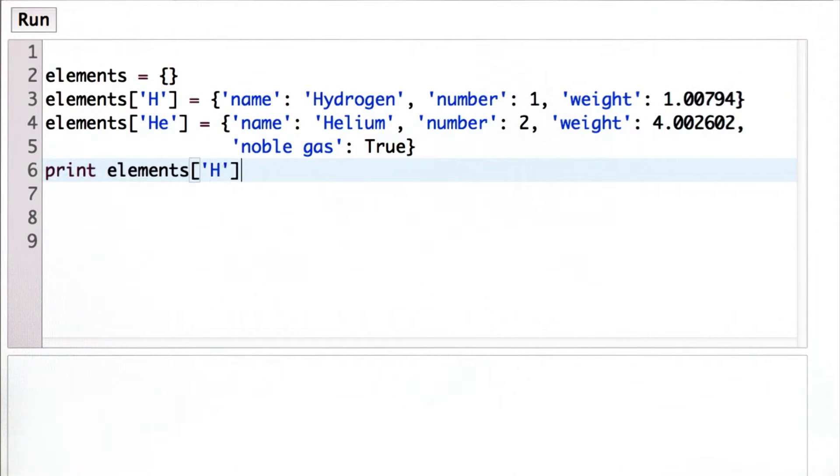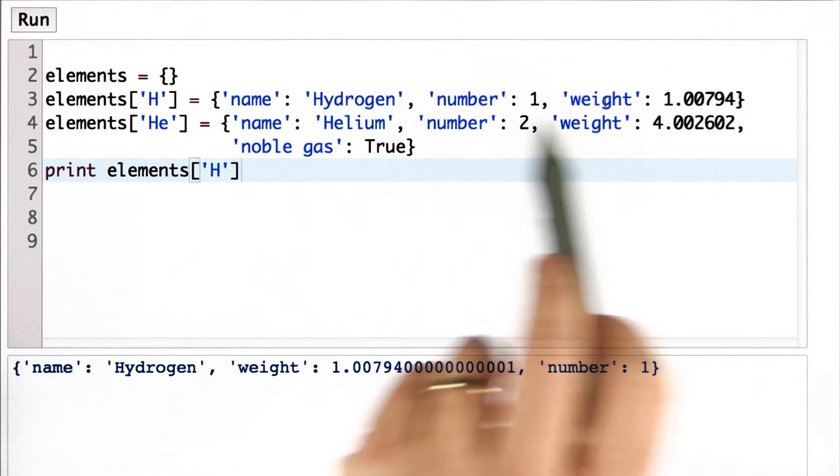So now we can look up the element H. We'll see its entry. Again, note that it's a dictionary, so the order is not the same as the order that we used here.